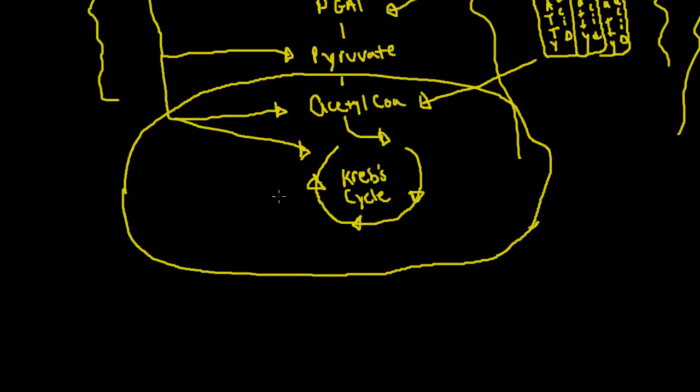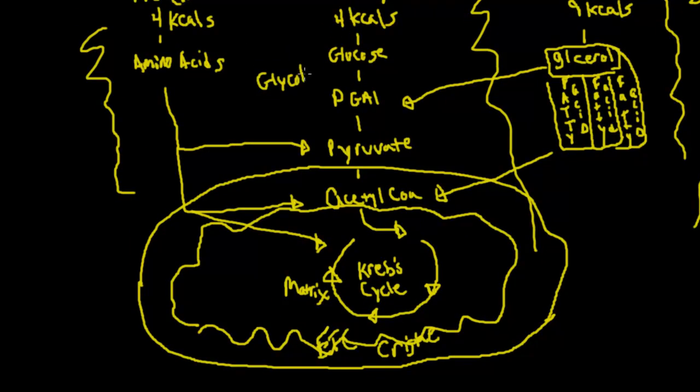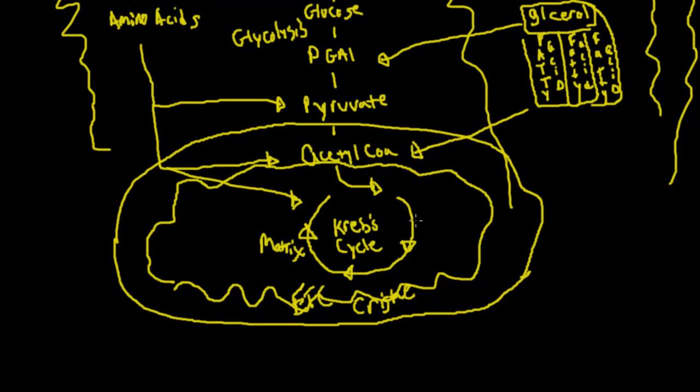And then this portion here is going to take place in the Krebs cycle inside the mitochondria. We have acetyl-CoA that comes in. The Krebs cycle itself is going to happen out here in the matrix. And then the electron transport chain, which we've talked about in other videos, is going to happen out here in this intermembrane space. The ETC happens here in that intermembrane space inside that crista, here in the intermembrane space of the mitochondria. We would have glycolysis happening out here in the cytosol.